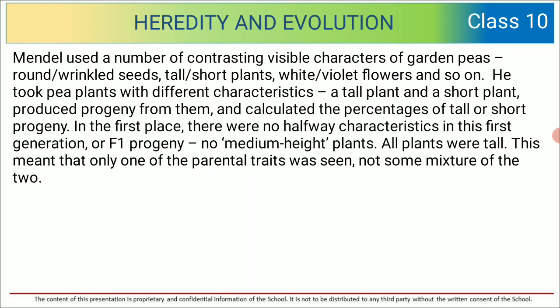In the first generation, or F1 progeny, there were no halfway characteristics. No medium height plants — all plants were tall. This meant that only one of the parental traits was seen, not some mixture of the two. So in the F1 generation, all the plants were tall; there was no mixture, there was no combination seen.